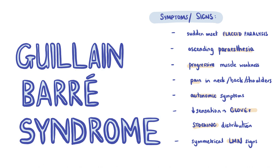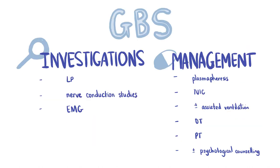Nerves of the autonomic system may also be affected, resulting in symptoms such as orthostatic hypotension, urinary retention, arrhythmias, and constipation. On examination, patients will have sensory disturbance in a glove and stocking distribution as well as symmetrical lower motor neuron signs. Investigations to diagnose GBS include a lumbar puncture, which will show a rise in protein with a normal white blood cell count, and nerve conduction studies. Treatment involves plasmapheresis, which removes antibodies attacking the neurons, as well as IV immunoglobulins. Assisted ventilation is used in patients whose respiratory muscles have been affected.